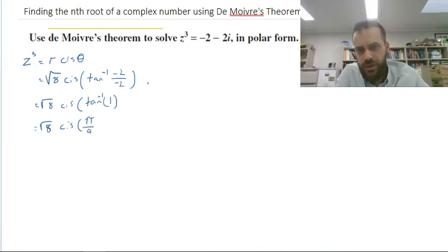But consider what quadrant you're in. Negative 2, negative 2. You're in the third quadrant. So it's not pi on 4, it's 5 pi on 4.